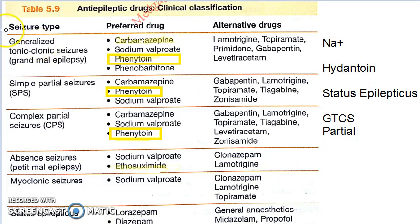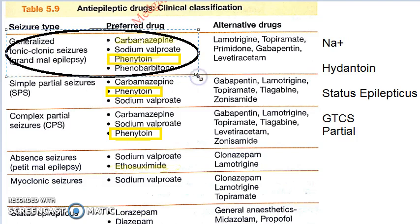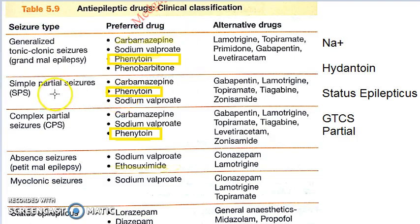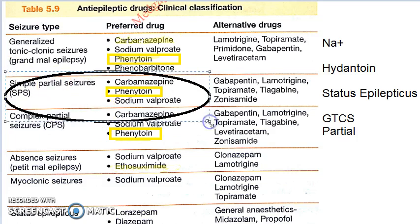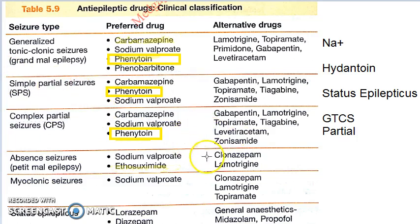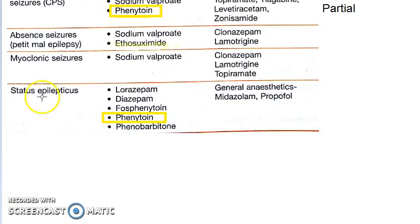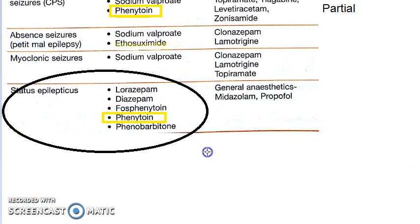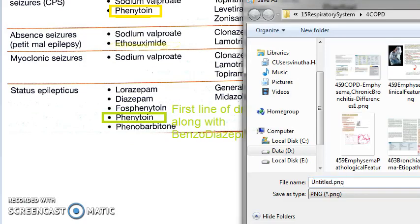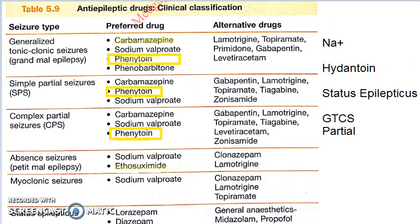Looking at the table: generalized tonic-clonic seizures — phenytoin comes second or third to carbamazepine. Simple partial seizures — phenytoin comes second line. Complex partial seizures — phenytoin comes second or third line. Then you have status epilepticus, where it is actually given along with benzodiazepines. So that is why it has been asked.